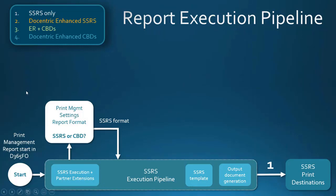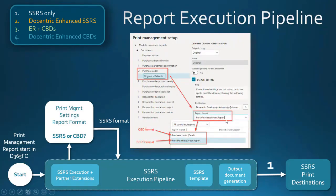Why is this white box here important? Now with the introduction of electronic reporting plus CBDs, this point is deciding if the execution will follow through SSRS or through CBDs. Where exactly is that point of decision? If we take a look at this print management setup for purchase order, you all know this field report format. Until you start using CBDs and register some CBD for your report, you will see only the SSRS format. By registering the CBD format, you will get it also in this list. By selecting SSRS or CBD format, you are basically telling D365 to continue your execution through SSRS or to go through a completely different path.